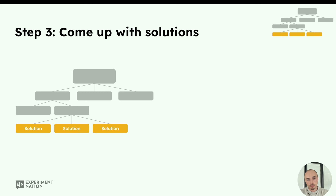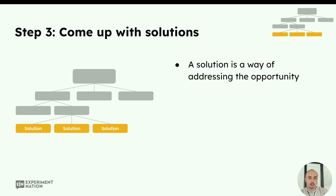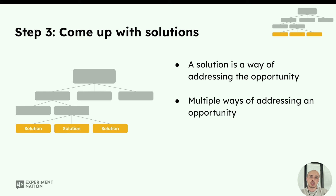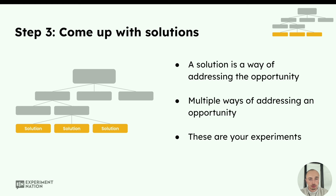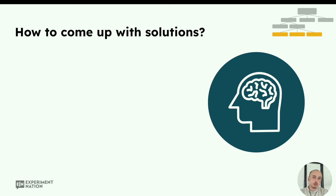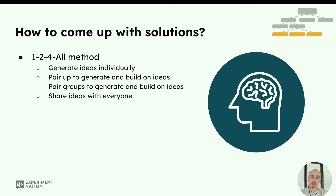Now we come to step three: coming up with solutions. A solution is a way of addressing the opportunity, and there are multiple ways of addressing any opportunity, so we want to make sure we have multiple ideas below one opportunity. We don't just want to implement these ideas — we want to test, experiment with, and validate them. We hold brainstorms, for example via the 1-2-4-All method: generate ideas individually, pair up and build on those ideas, then pair the groups, and finally share ideas with everyone and pick the most promising ones.